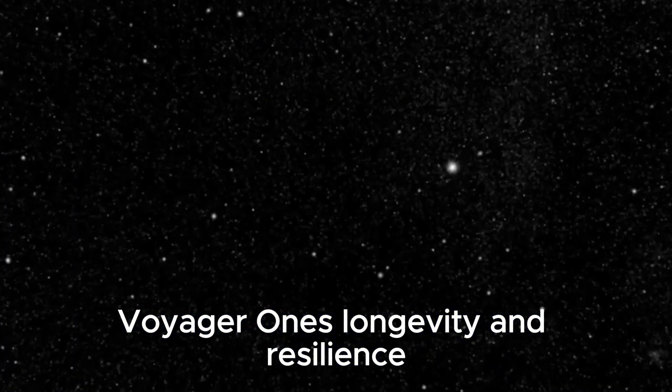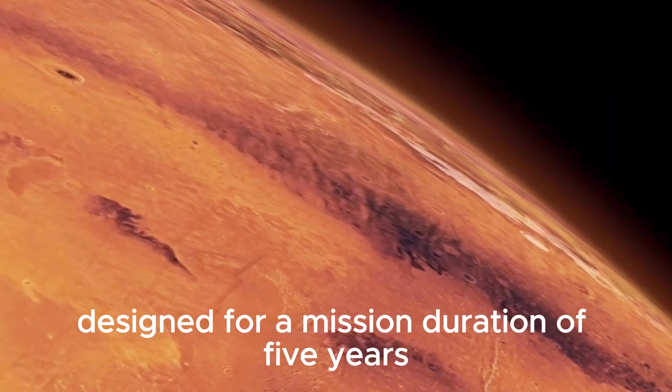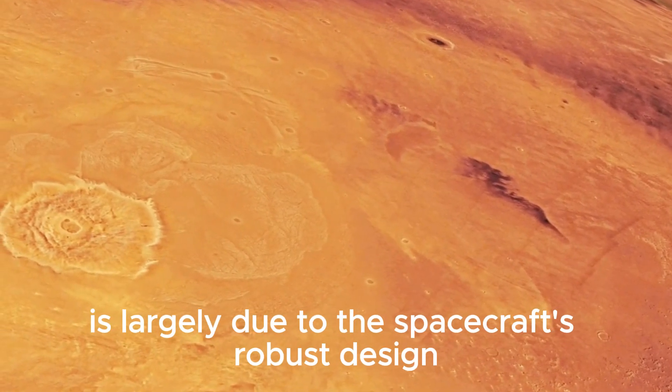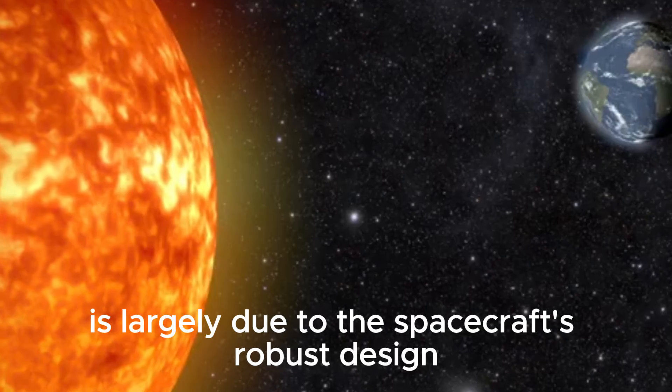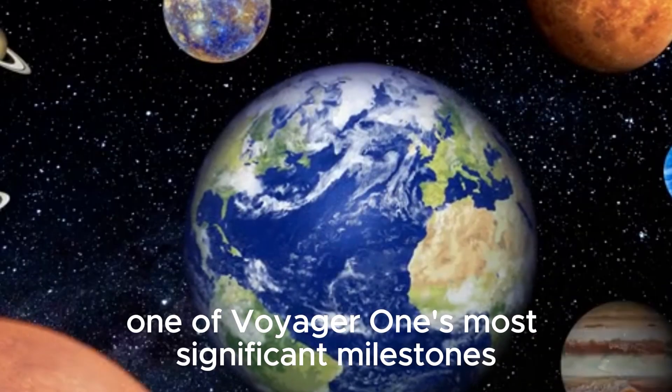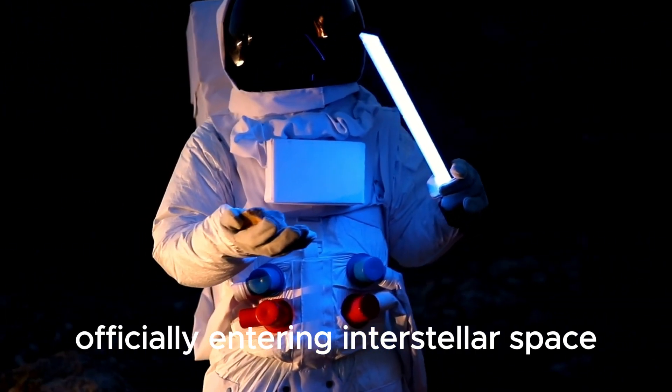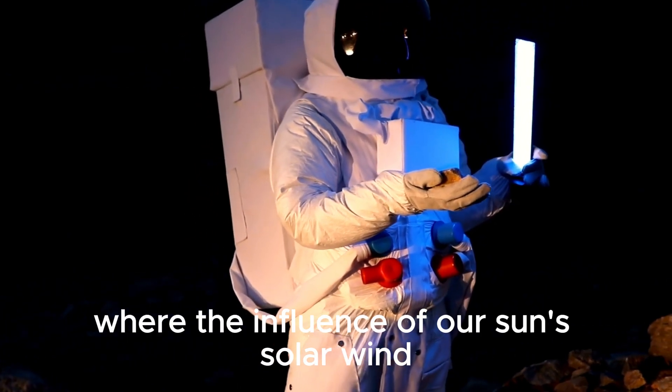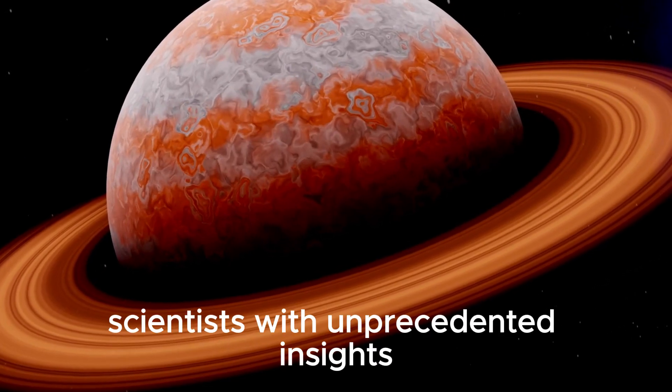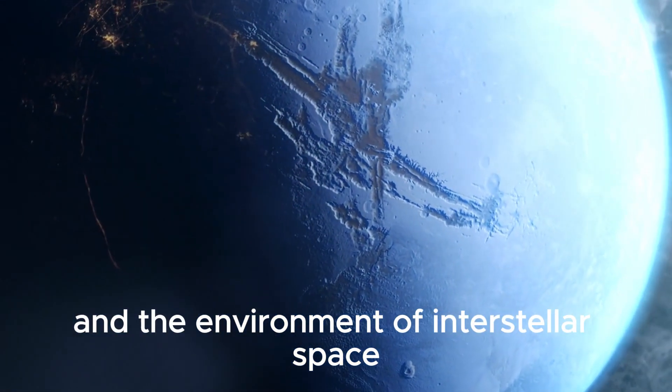Voyager 1's longevity and resilience have defied all expectations. Originally designed for a mission duration of five years, it has now been operational for over four decades. This remarkable achievement is largely due to the spacecraft's robust design and the dedication of the teams who have managed its mission over the years. One of Voyager 1's most significant milestones came in August 2012 when it crossed the heliopause, officially entering interstellar space. This boundary marked the point where the influence of our sun's solar wind gives way to the interstellar medium.